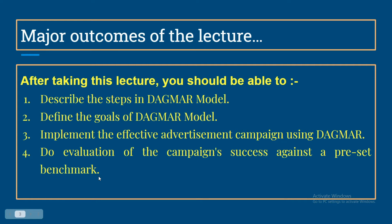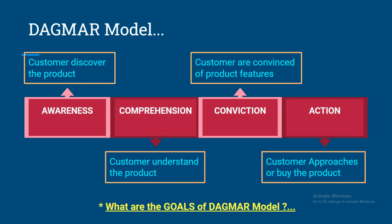Please give close attention throughout the video — you will have lots of learning. The DAGMAR approach is a marketing strategy that guides the consumer through four phases: Awareness, Comprehension, Conviction, and Action. This path is also referred to as the ACCA formula.